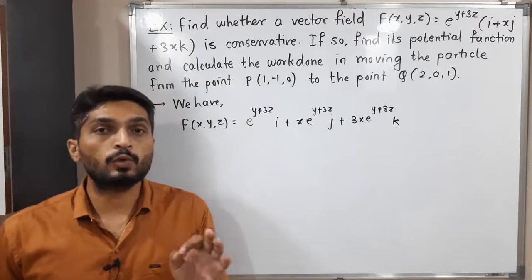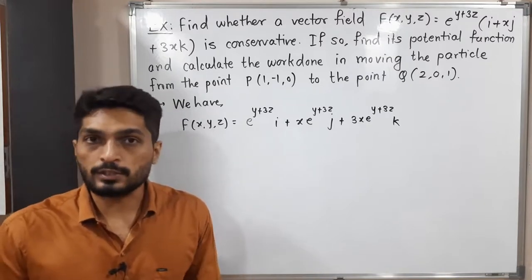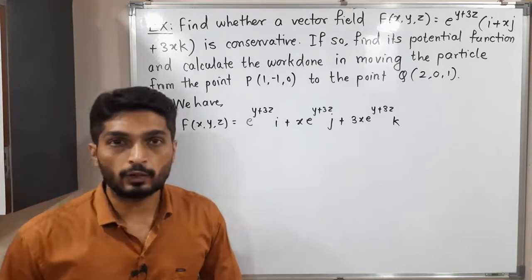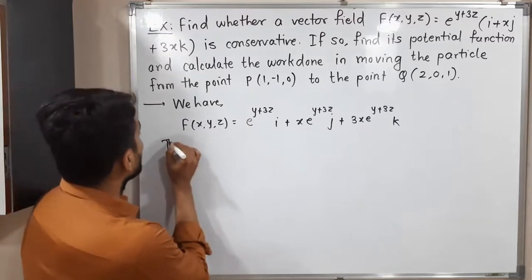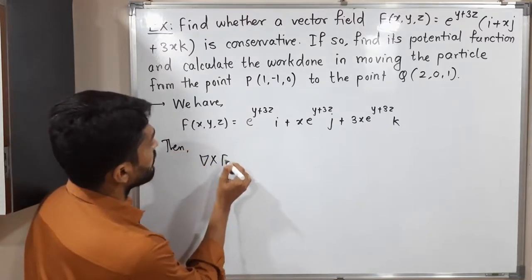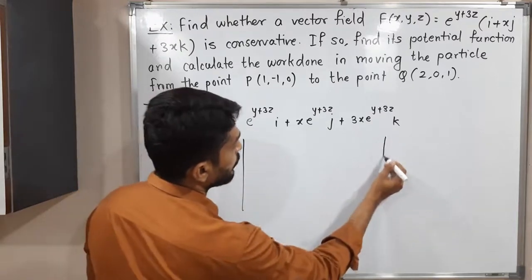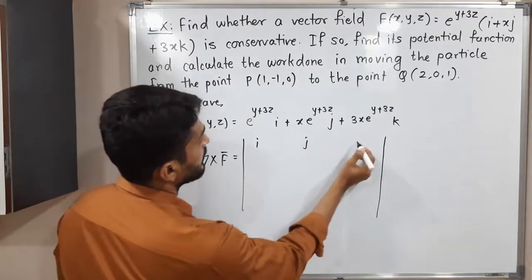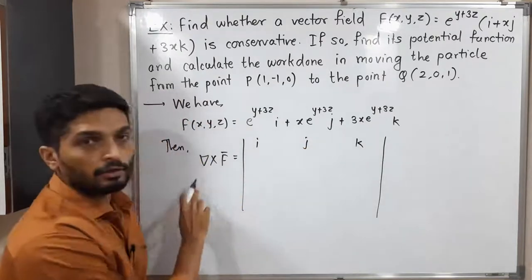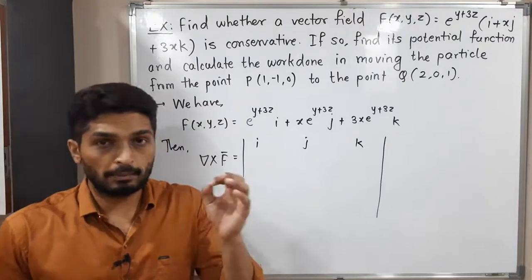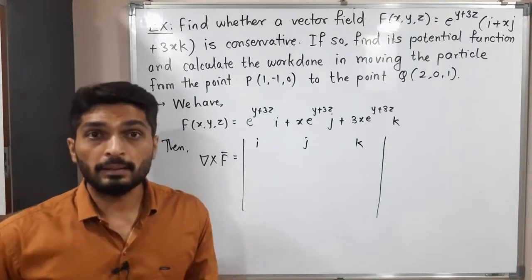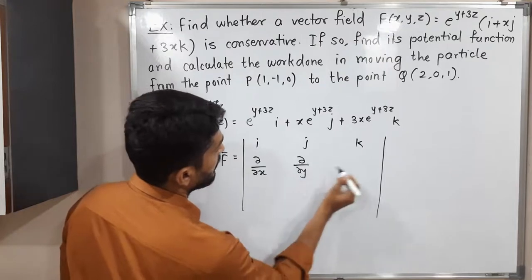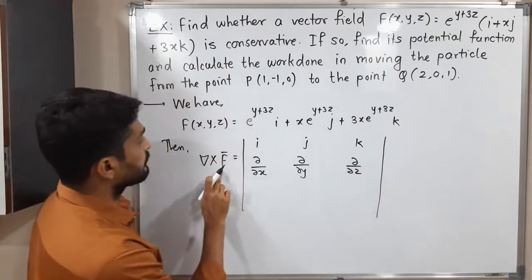We have to find whether this vector field is conservative or not. When curl of F̄ is equal to zero, we say the field is conservative. Let us find curl of F̄, which means del cross F̄. You know how to find the cross product by solving a determinant. We get i, j, k multiplied by the del operator: ∂/∂x i + ∂/∂y j + ∂/∂z k. So I write ∂/∂x, ∂/∂y, and ∂/∂z in the determinant.